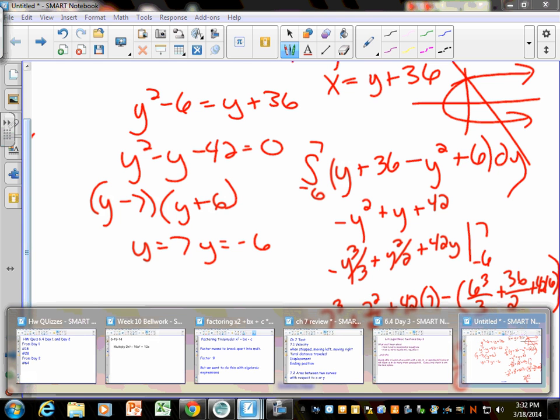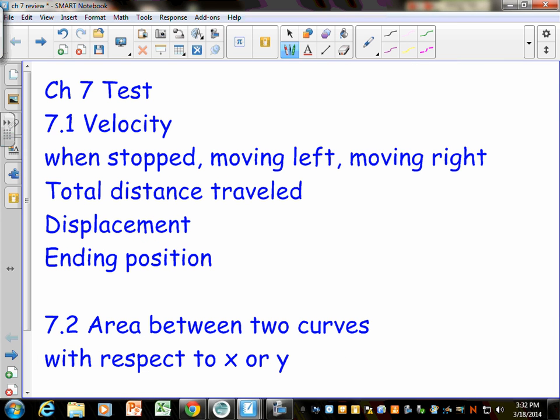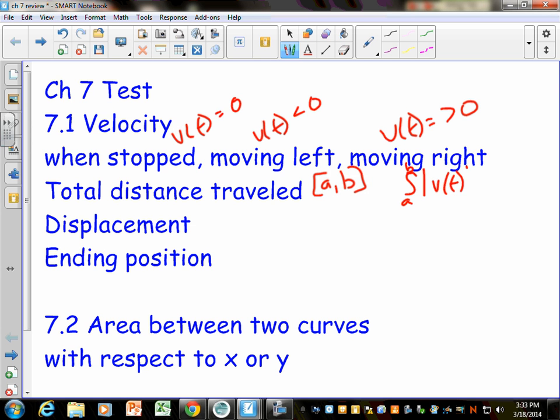Okay, let's talk about the test. I kind of broke this up by section. Remember, we only did three sections because I skipped 7.5. 7.1 was the front side of that worksheet, which I know that some people have forgotten about, but remember that to find when the velocity stops is when the velocity equals zero. Moving to the left is when your velocity is less than zero, and moving to the right is when your velocity is greater than zero. Remember that total distance traveled, if you're going from an interval from a to b is area under the curve, or the integral from a to b of the absolute value of the velocity function.